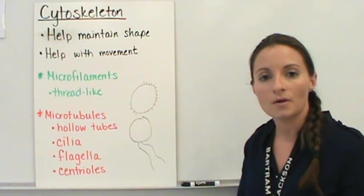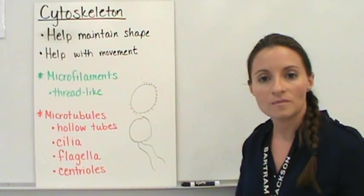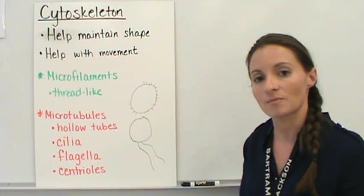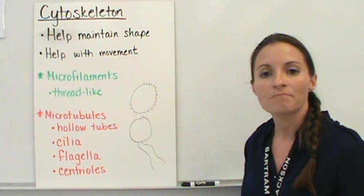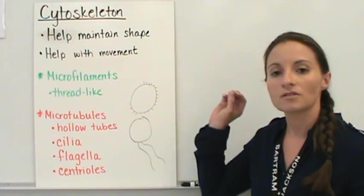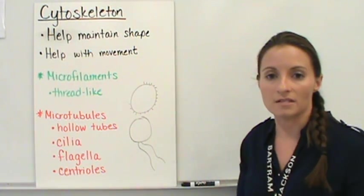So to wrap it up, we've talked about vacuoles, which are our storage tanks, lysosomes, which help to break down things within the cell that we need in smaller pieces or waste, and then our cytoskeleton, which helps provide structure, maintain shape, and provide movement for the cell.